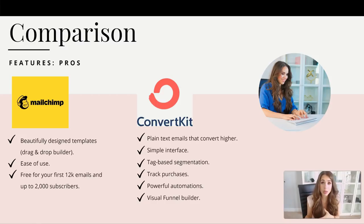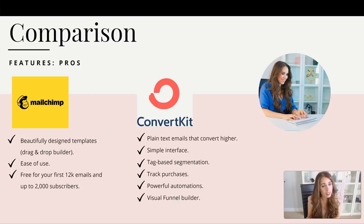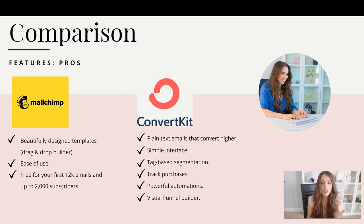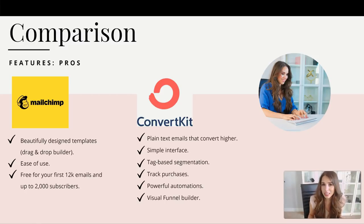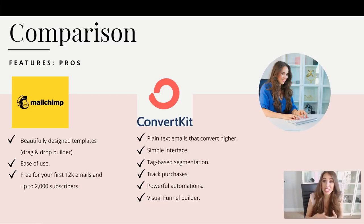Now let's talk about ConvertKit and some of its pros. Number one: plain text emails that convert higher. If you have an online business, I highly recommend utilizing plain text emails. Number two: it's a very simple interface, just like MailChimp — very easy to set up. In fact, it was described as one of the easiest tools to use, and I'll share a little quote about that later.